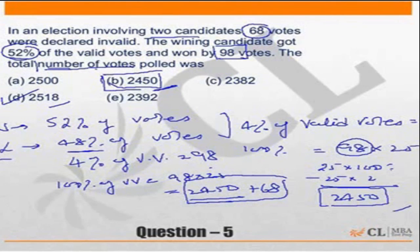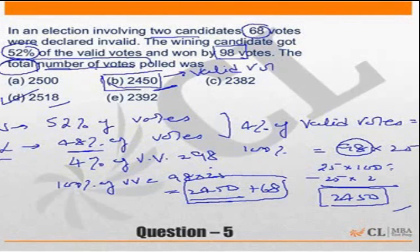Many students incorrectly mark the answer as 2450 because they calculate the valid votes but do not notice that the question asks for the total number of votes. 2450 is the total number of valid votes, but the answer — total number of votes — is 2518.